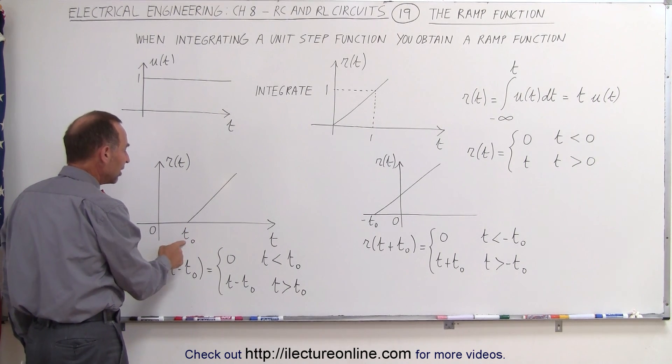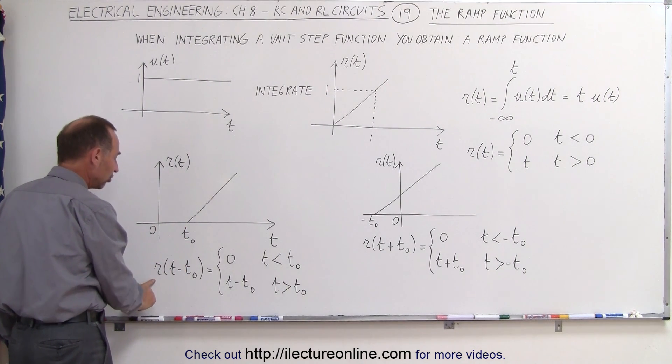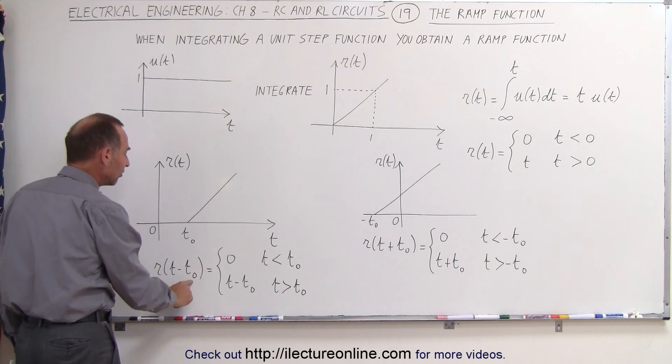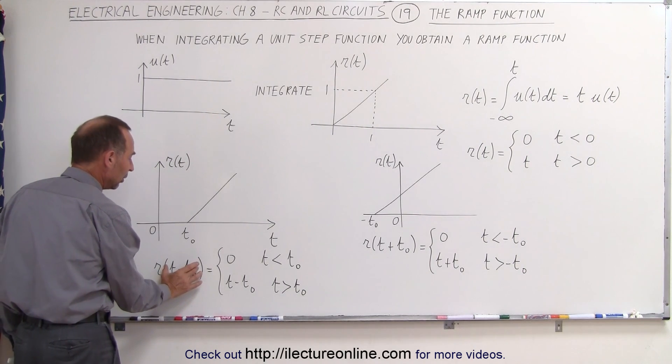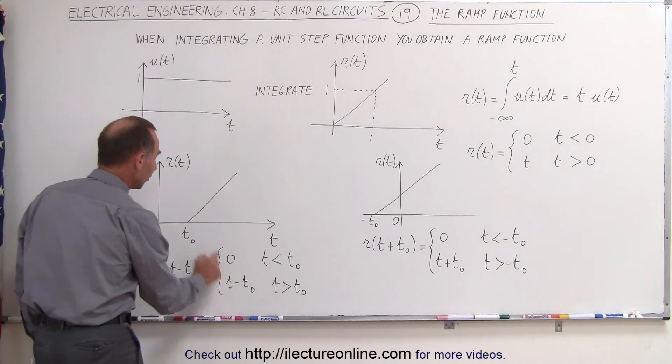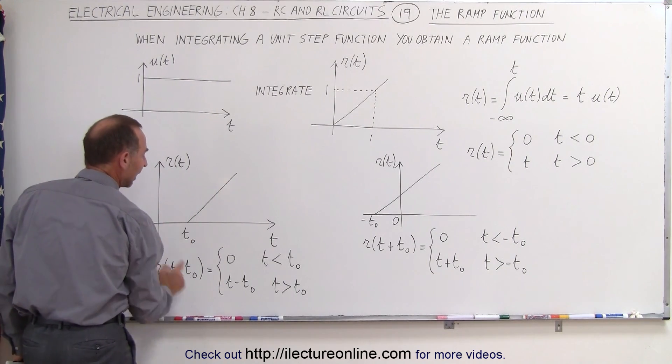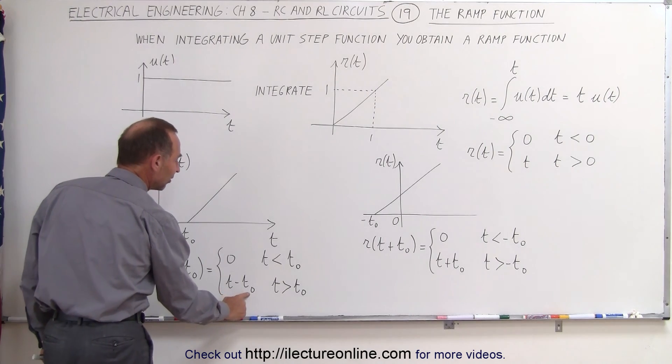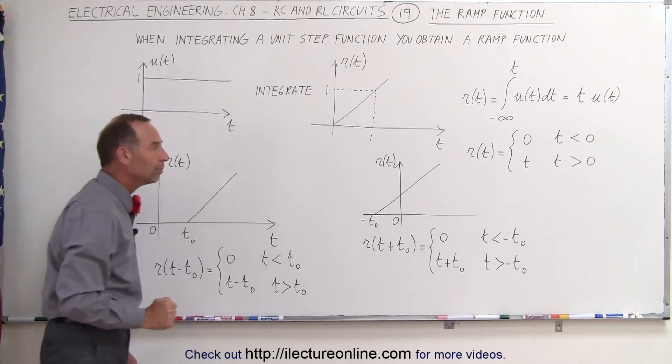If it's supposed to start at t sub not then the ramp function from t minus t sub not, so it's a function of t minus t sub not, it will be equal to t minus t sub not and it will be equal to t minus t sub not after t sub not.